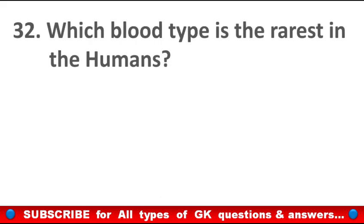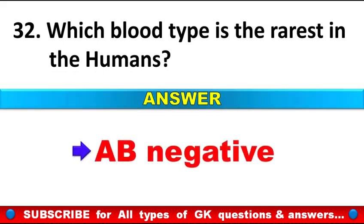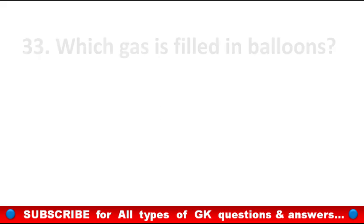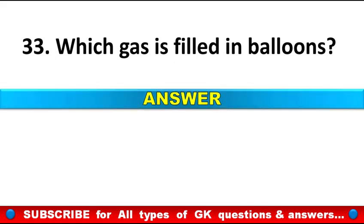Which blood type is the rarest in humans? Answer: AB negative. Which gas is filled in balloons? Answer: Helium.